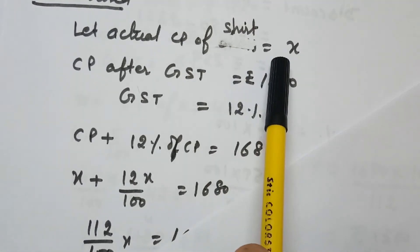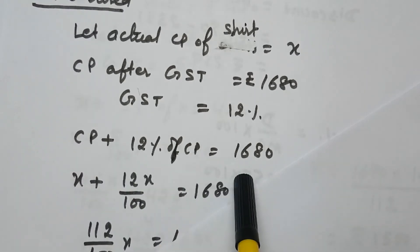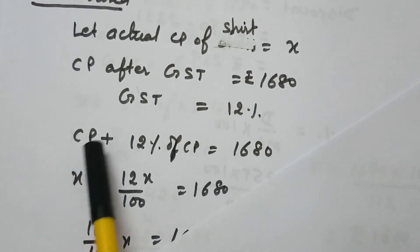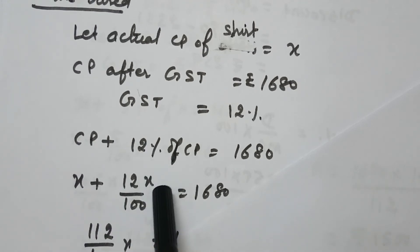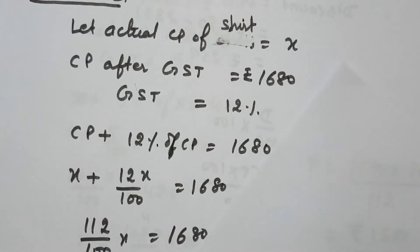GST is added to the actual cost price, so cost price plus 12% of cost price equals 1680. Now cost price is X, so we have X plus 12X upon 100 equals 1680.